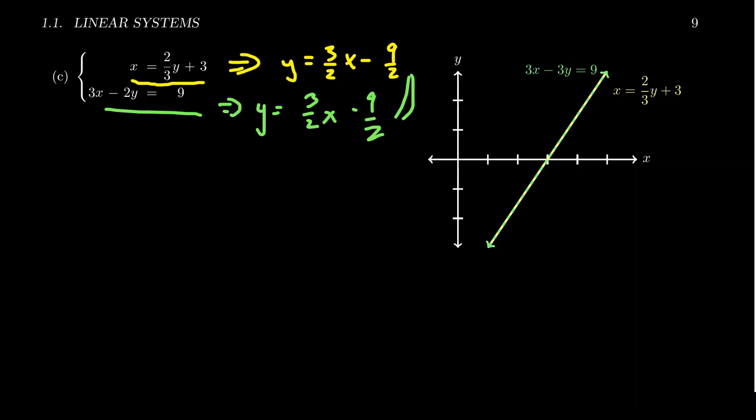When you graph these two equations, the lines overlap entirely — any point on the first line is automatically on the second line. So any solution to the first equation is a solution to the second, giving infinitely many solutions. This is the dependent case. For two-dimensional examples, these are the only three possibilities: two lines intersect at a unique point, they overlap giving infinite intersections, or they are parallel with no intersection.